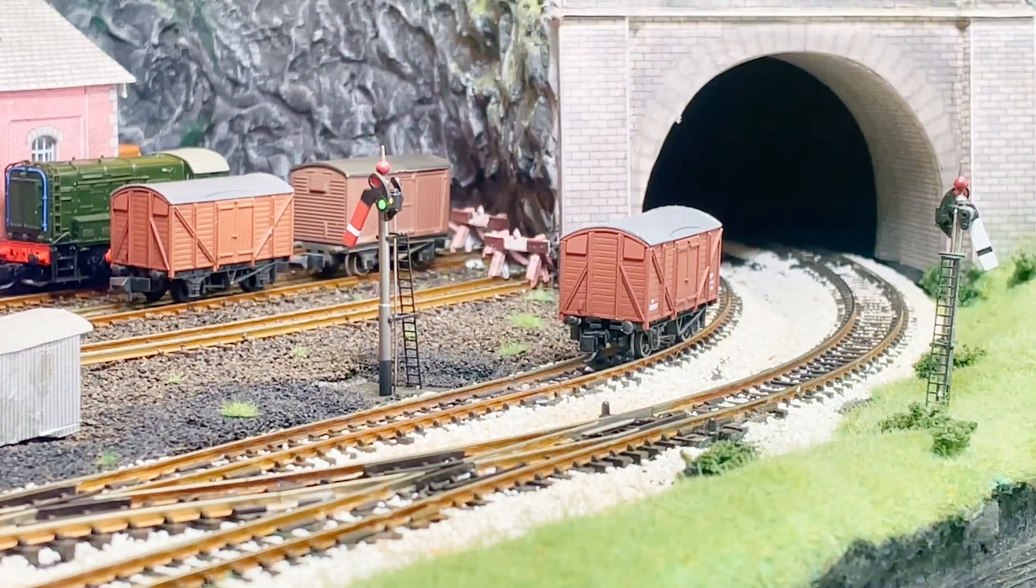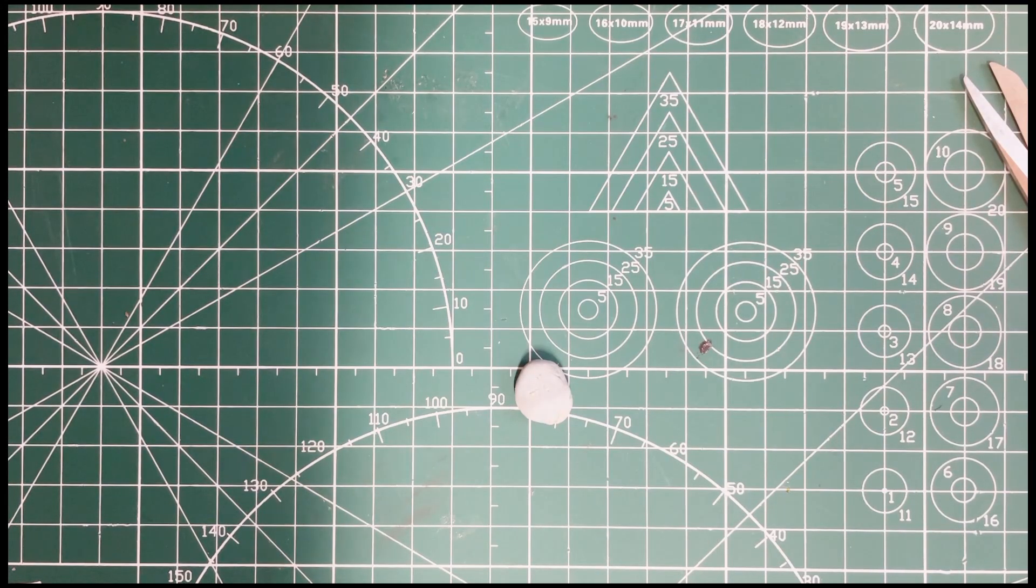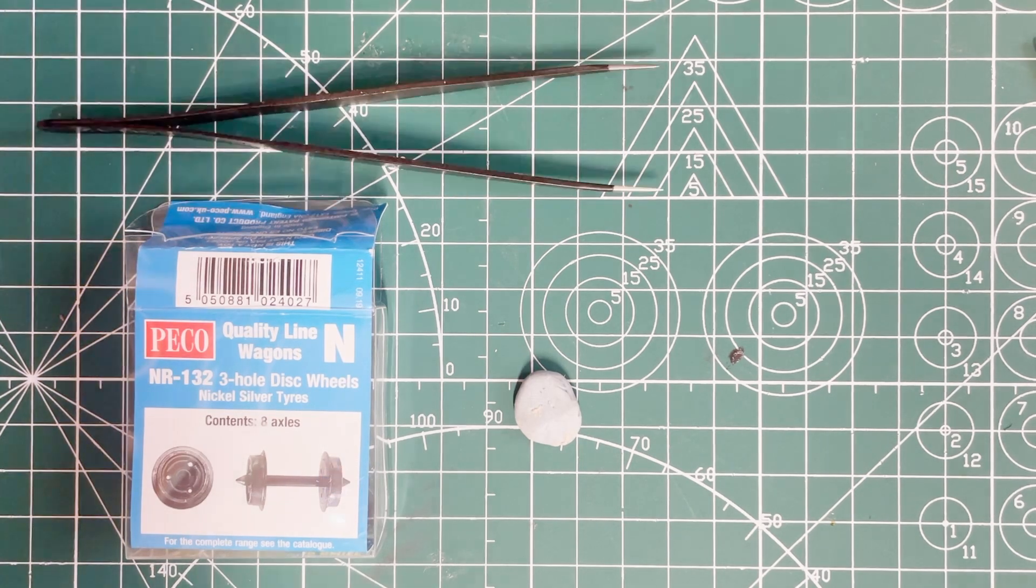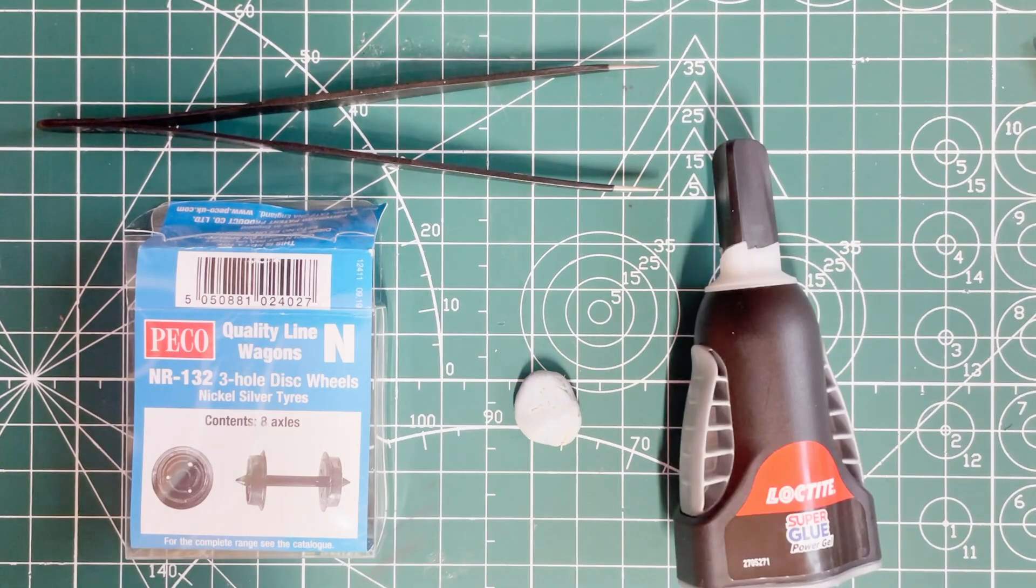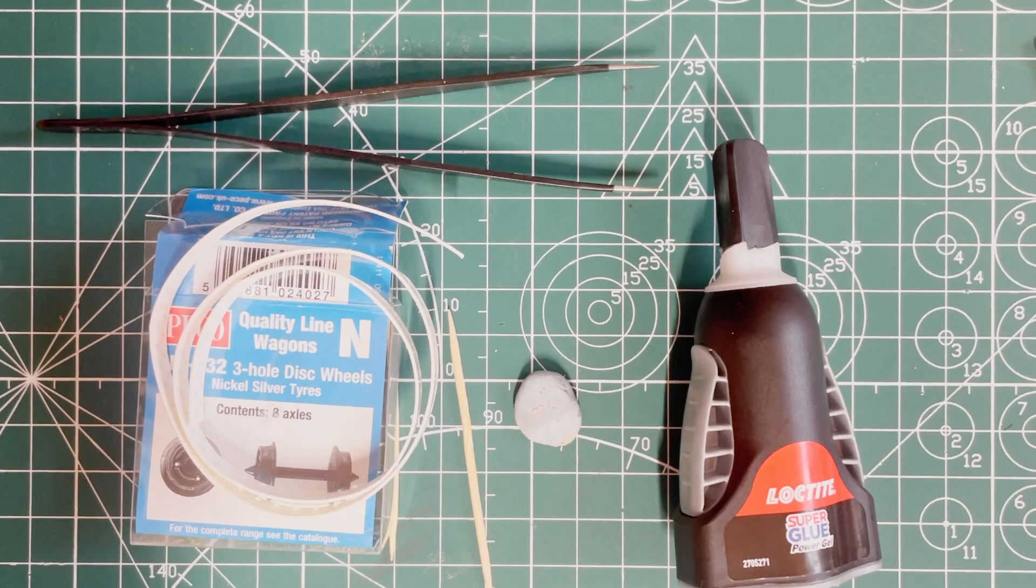So what materials do we need? Some blue tack to hold the wheel, some wheels with metal tires - I use the Pico wheels - some tweezers for working with the resistors, some super glue, a couple of cocktail sticks, some resistors but more about them later, and some conductive paint. I'll talk more about that later as well.